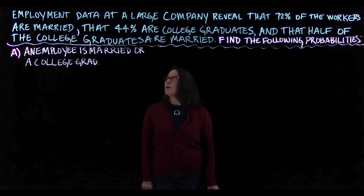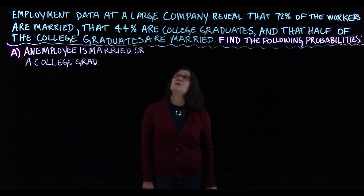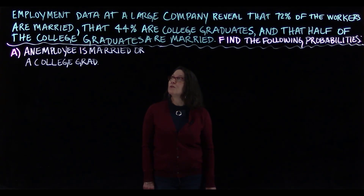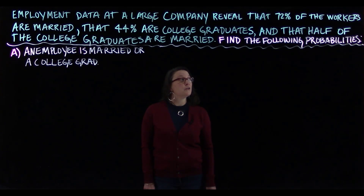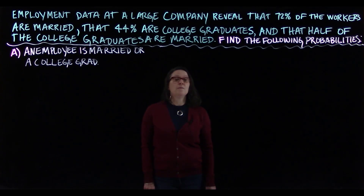We're going to do four problems with one context. The context is employment data at a large company that reveals 72% of the workers are married, that 44% are college graduates, and that half of the college graduates are married. So find the following probabilities.